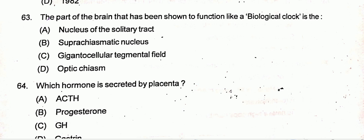Question number 63: The part of the brain that has been shown to function like a biological clock — option B is the correct one, that is the suprachiasmatic nucleus.